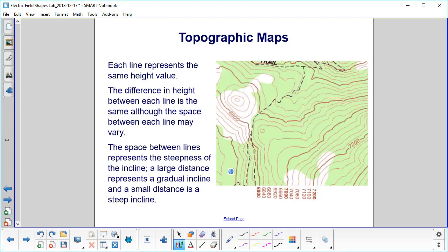We'll start by looking at a topographic map. So if anybody's ever camped or gone hiking, maybe they've seen something like this. Each line on the map here represents the same height above sea level value.